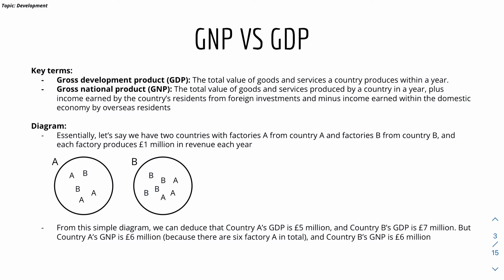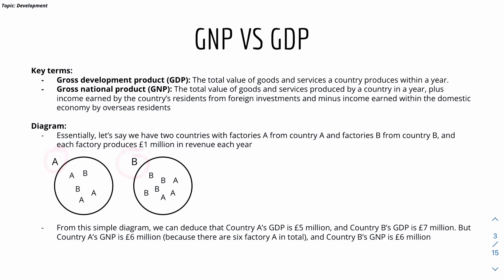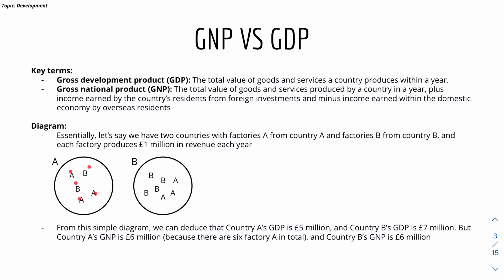Now let's look at GNP versus GDP. As mentioned, GNP is the Gross National Product, whereas GDP — the Gross Domestic Product — is the total value of goods and services a country produces within a year. Here's a quick example. Let's say we have two countries, Country A and Country B. They each have factories — Country A has factories A, and Country B has factories B in both countries. Each factory produces £1 million in revenue per year. From this diagram, we can see that Country A's GDP is £5 million, because GDP is only concerned with what's happening within a country — Country A has 5 factories, so a GDP of £5 million.